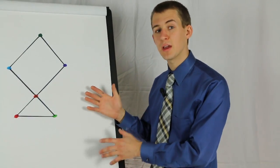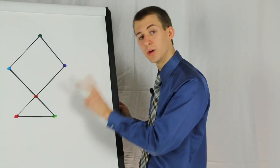For example, here, this is not a Hamiltonian path because we have to pass through this node twice.